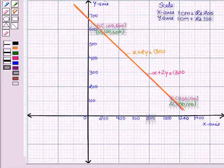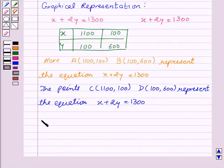Thus, we see that the line representing the two equations X plus 2Y equal to Rs. 1300 is a coincident line.